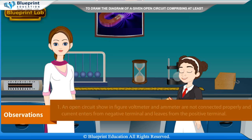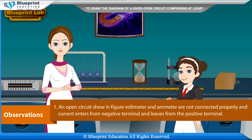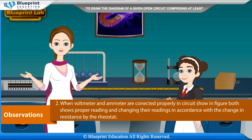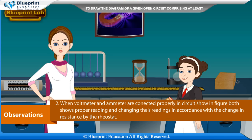Observation: In the open circuit shown in figure 2, voltmeter and ammeter are not connected properly and current enters from the negative terminal and leaves from the positive terminal. When voltmeter and ammeter are connected properly in the corrected circuit shown in figure 2, both show proper readings and change their readings in accordance with the change in resistance by the rheostat.